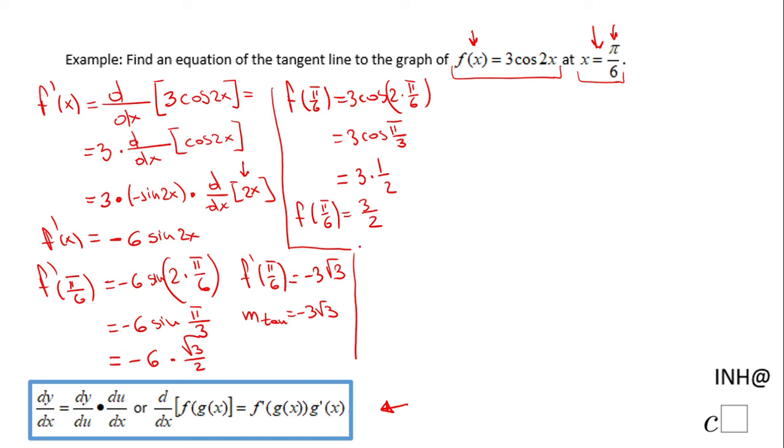So we have the point now, which is π/6 and 3/2. We're going to use the point-slope form, y minus y₁. So y minus 3/2.